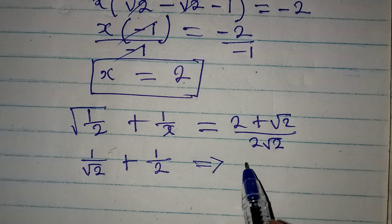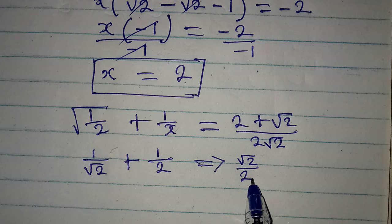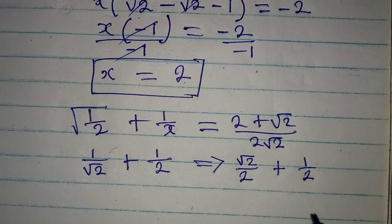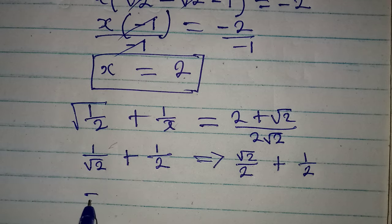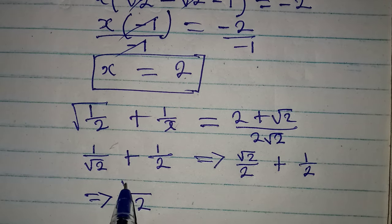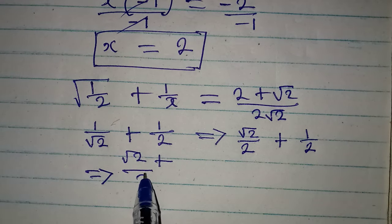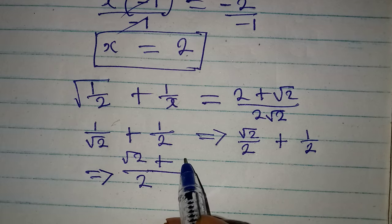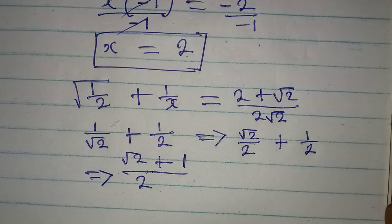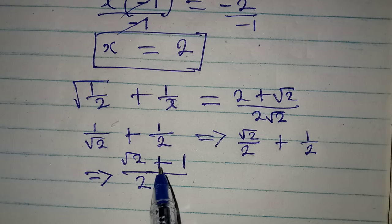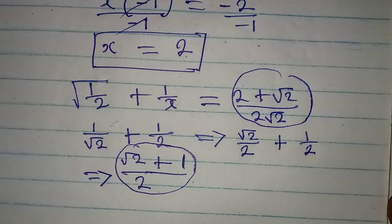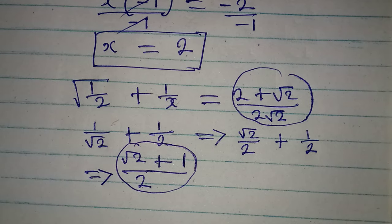Rationalizing 1 over square root of 2 gives root 2 over 2, so we have root 2 over 2 plus 1 over 2. The LCM is 2: 2 divided by 2 is 1, times root 2 gives root 2; plus 2 divided by 2 is 1, times 1 gives 1. So the left side simplifies to root 2 plus 1 over 2.